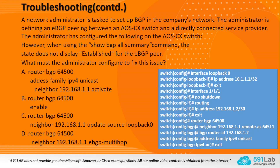The next question under troubleshooting: a network administrator is setting up BGP between an AOS-CX switch and a directly connected service provider. The administrator configured eBGP peering on the AOS-CX switch, but when using the show bgp all summary command, the state does not display 'established' for the eBGP peering. What must the administrator configure to fix this issue?